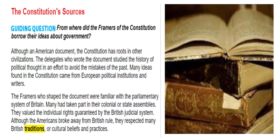Question number one: Why did the Constitutional Convention delegates study the history of political thought? They believed they could avoid the mistakes of the past by studying what those mistakes were — that is much of why we teach history today. Question two: Where did many of the ideas found in the Constitution come from? They came from European political institutions and European writers. Question three: Even though we broke away from Britain, how did they influence our Constitution? Many of our founding fathers still valued those individual rights guaranteed in the British judicial system, and we still used many of the same traditions that Britain had passed down.